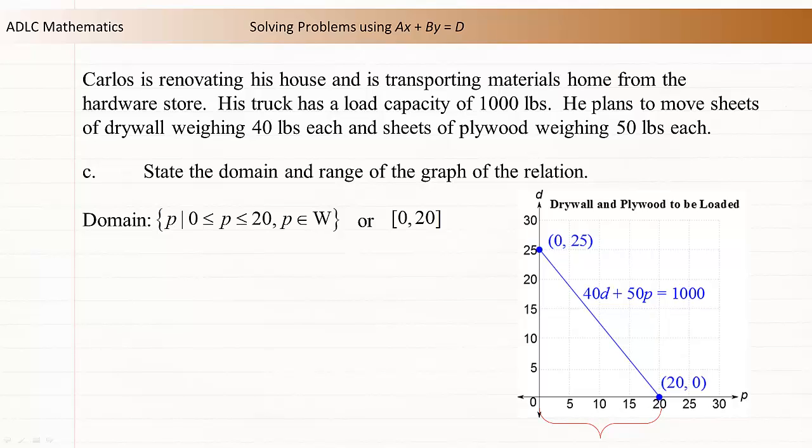Alternatively, the domain can be represented using interval notation. p lies between 0 and 20, where the lower endpoint is included, and the upper endpoint is included.